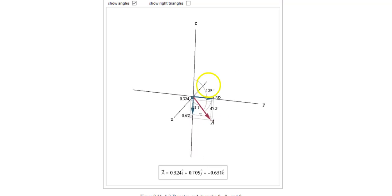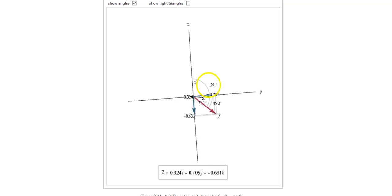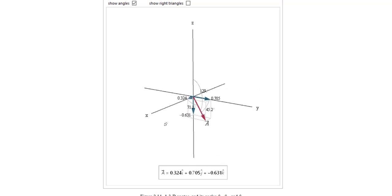And gamma is measured from the z-axis. And we can see that here, 129 degrees. So it looks like we're right.